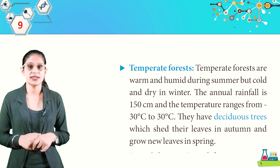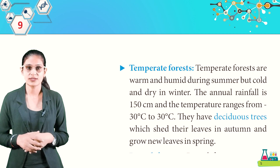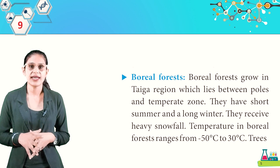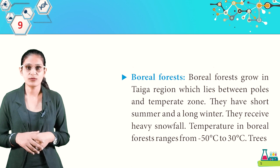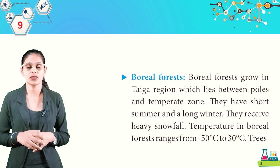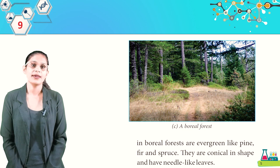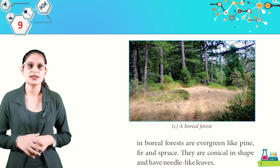Boreal forests grow in the taiga region, which lies between the polar and temperate zones. They have short summers and long winters, and receive heavy snowfall. Temperature in boreal forests ranges from -50°C to 30°C. Trees in boreal forests — such as pine, fir, and spruce — are evergreen, conical in shape, and have needle-like leaves.